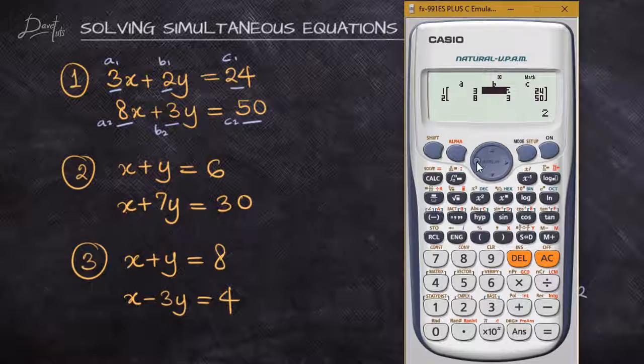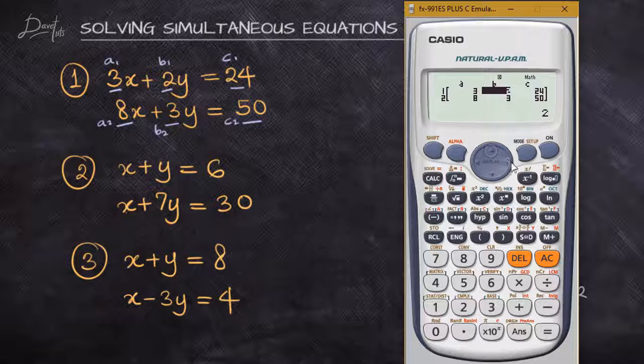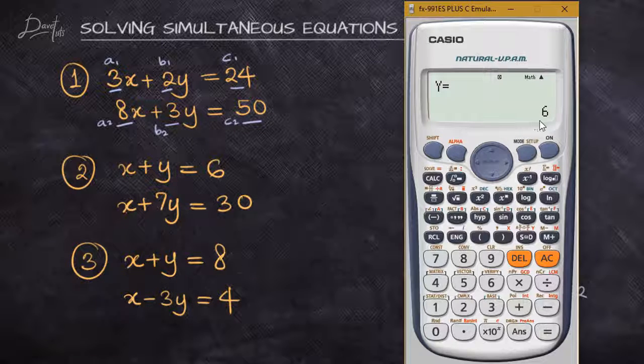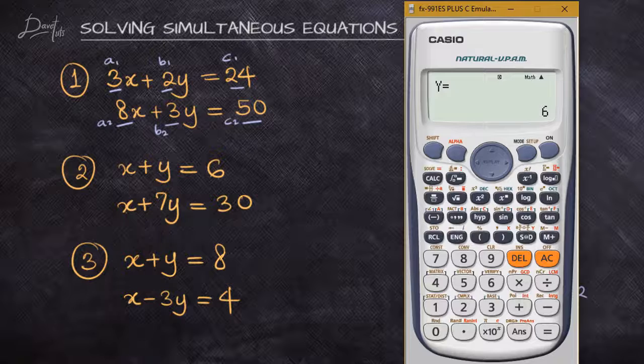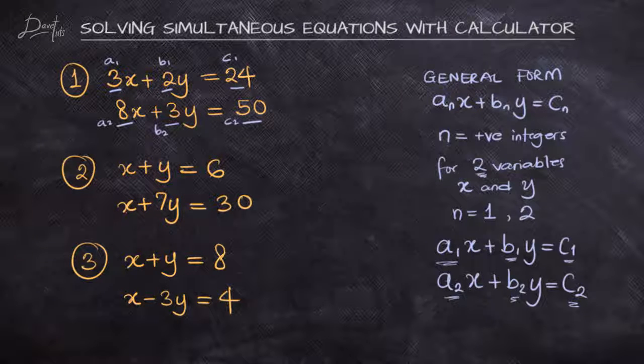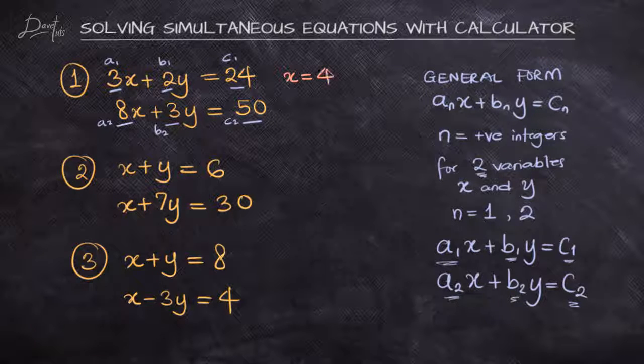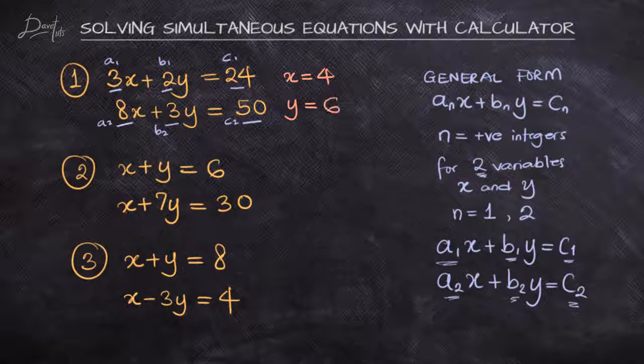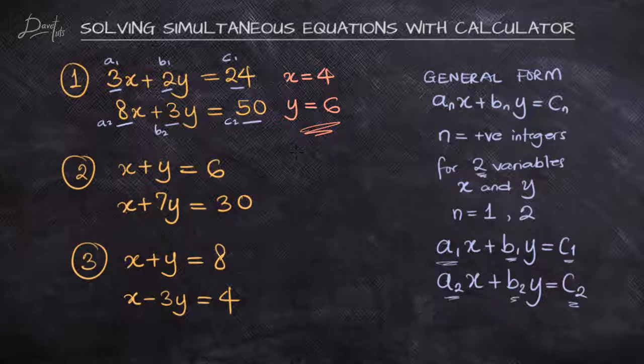After you have done it, it's a good process to always check if there's any problem with what you have input. After confirming it's okay, only then press equals, and your x is given as 4 and y is given as 6. You can easily input the value to check: 3 times 4 is 12, 2 times 6 is also 12, 12 plus 12 gives us 24. You can see how simple it is to use your scientific calculator to solve for simultaneous equations in two variables.